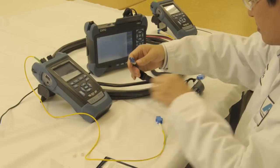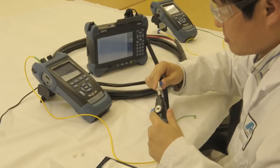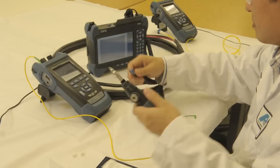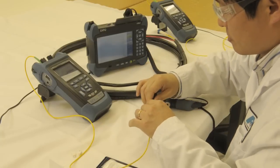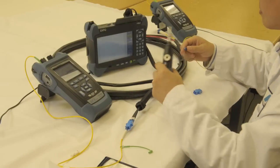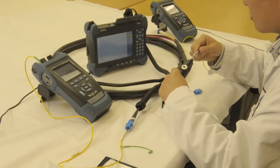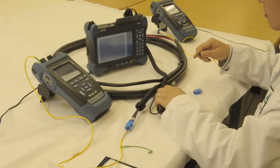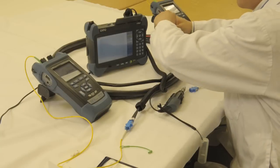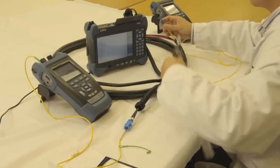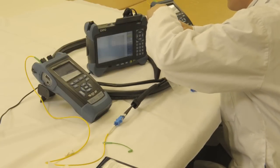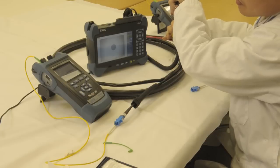We're going to check the device under test, make sure there's no contaminants. That fiber looks good and ready to test. Look at the receive cable, make sure that it's good. That looks good. Ready to test. Device under test looks good.